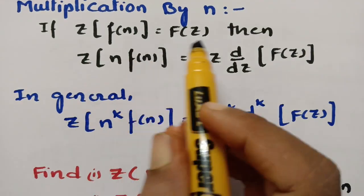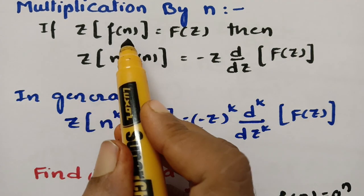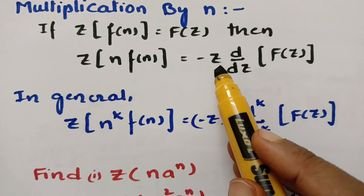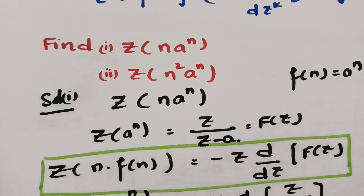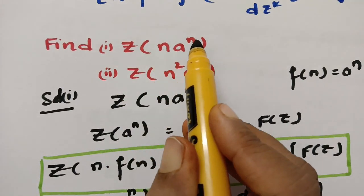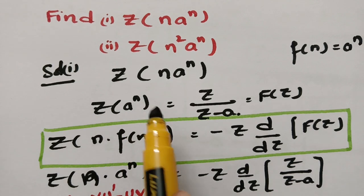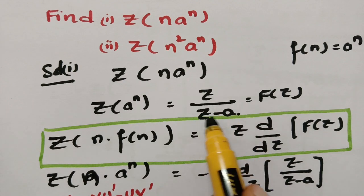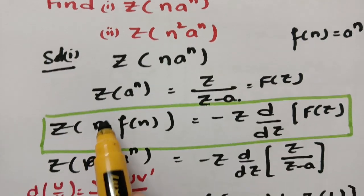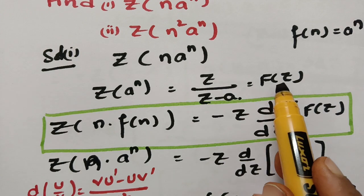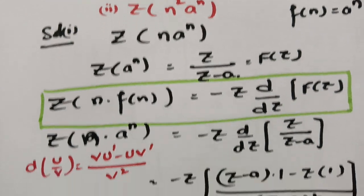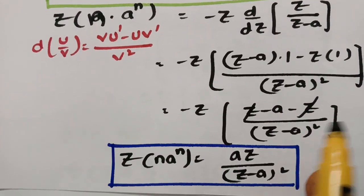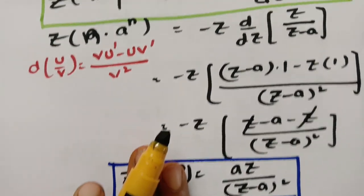To recap: if Z{f(n)} = F(z) and f(n) is multiplied by n, we make a derivative of F(z) and multiply with minus z. For Z{n·aⁿ}: first take Z{aⁿ} = Z/(Z−a), then applying the multiplication property and the u/v rule gives the answer aZ/(Z−a)².